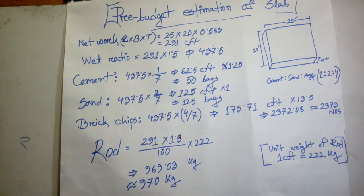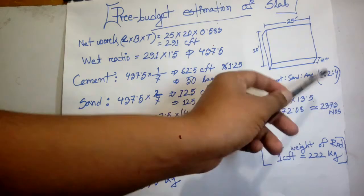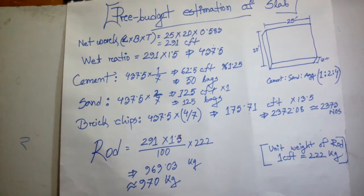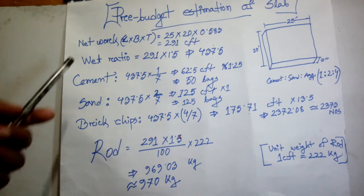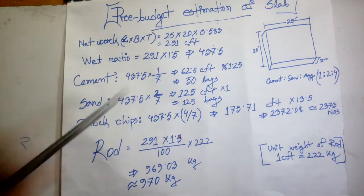In today's video, we have a slab designed with length 25 feet, width 20 feet, and slab thickness 7 inches. We have length into width into thickness: 25 × 20 × 7 inches. That means 7 inches is 0.583 feet. Here the calculation places 3 inches of clear cover.